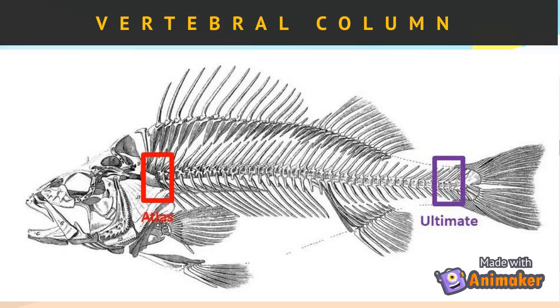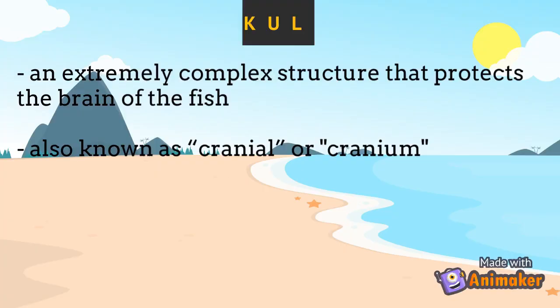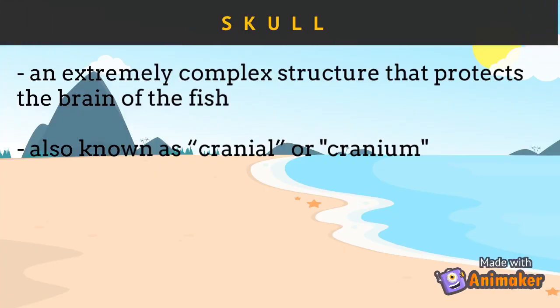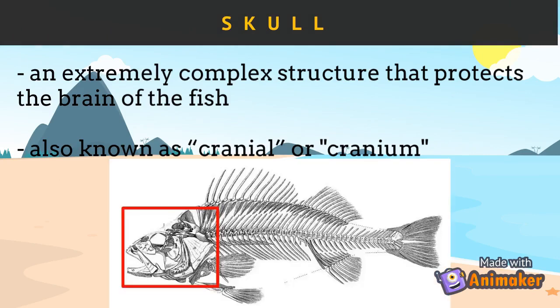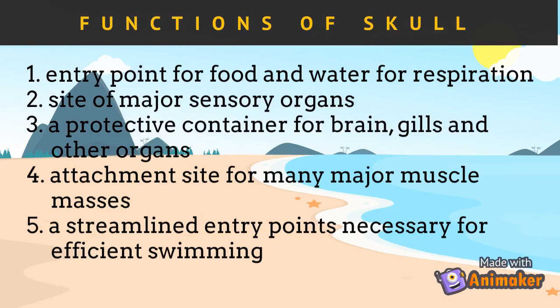The next component of the fish skeletal system is the skull. The skull is an extremely complex structure that protects the brain of the fish. In some cases, the skull is also called the cranial or cranium. The skull of bony fish is ossified or made from true bone, while it is little more than cartilaginous in sharks, rays, lampreys, and hagfishes, among others.